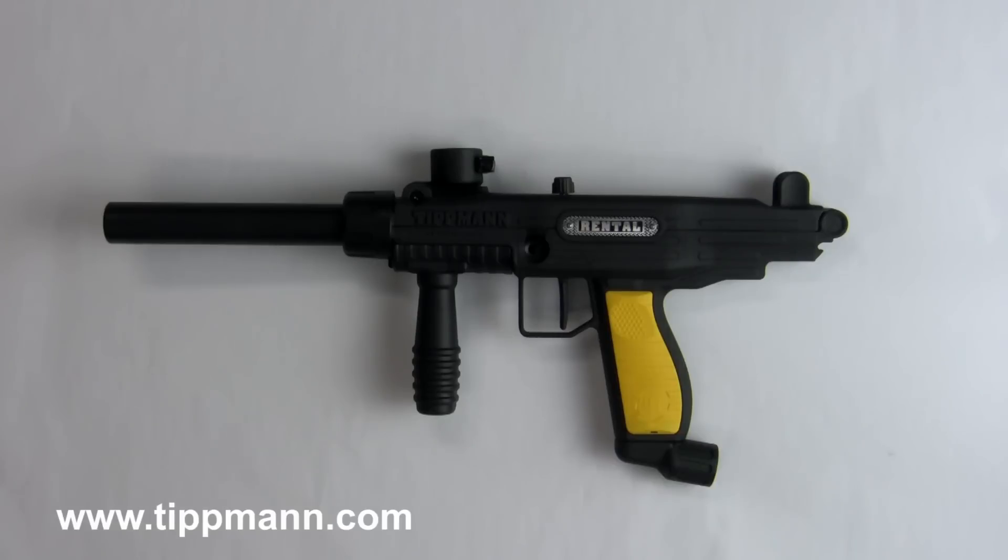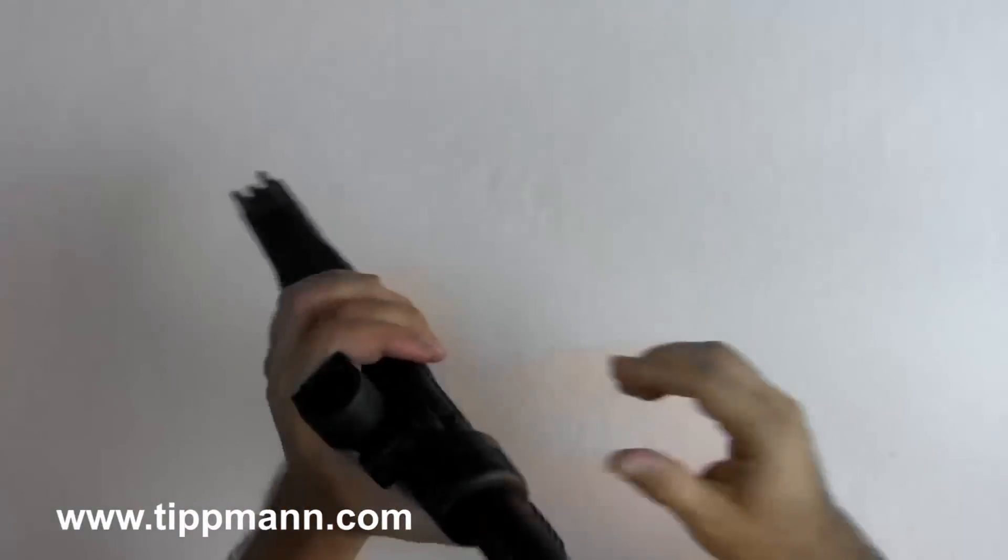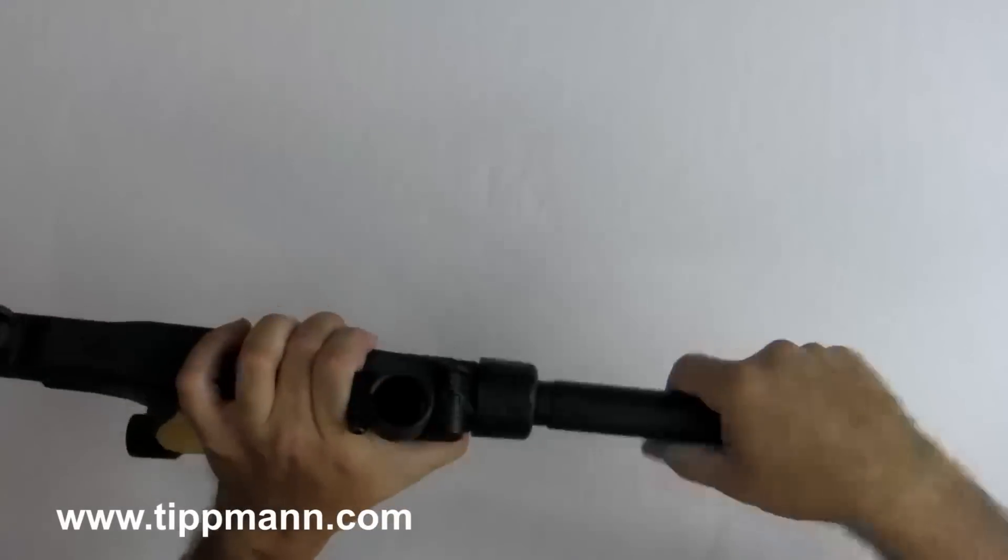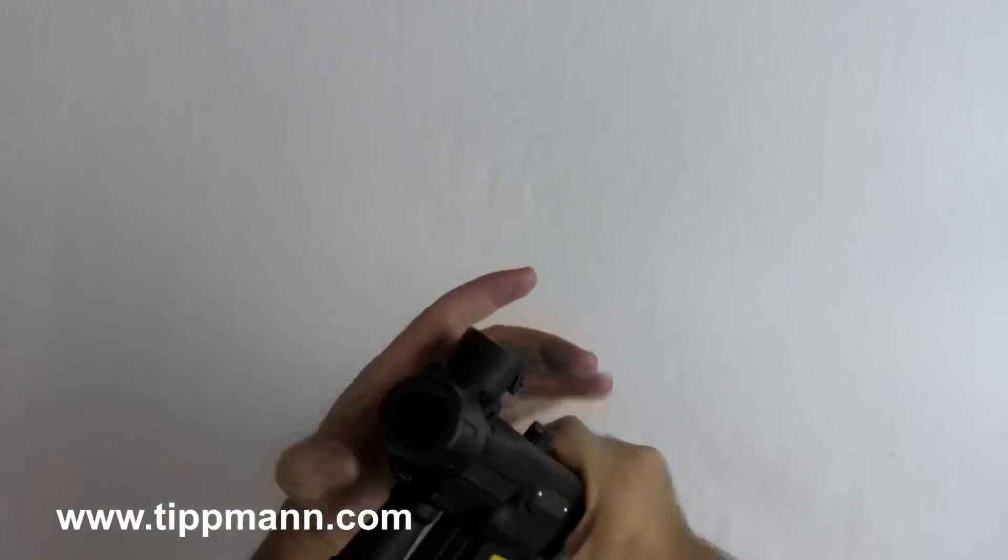In this video I'm going to show you how to change a trigger in the FT12 and FT50 rental marker. First we have to disassemble the marker and we begin with the removal of the barrel and then the barrel nut.